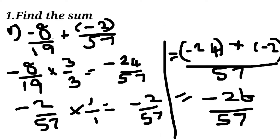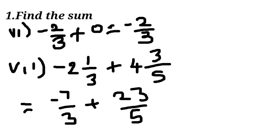Fifth sum: minus 8 by 19 plus minus 2 by 57. Here LCM is 57 and then we make equivalent fractions by multiplying, and we add and get minus 26 by 57.